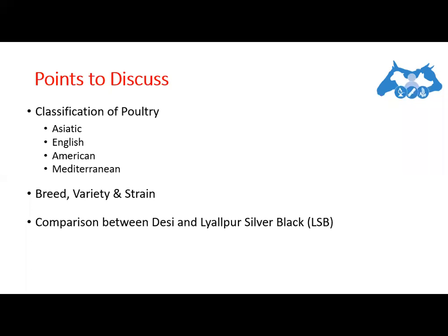The next category is the English class. The English class has a medium body size and can be used for both egg and meat purpose. It lays eggs with a brown shell color, and their earlobe color is red. Their skin color is white, and they do not have any feathers on their shank. This class is the only class which has white skin color — all other classes have yellow skin color.